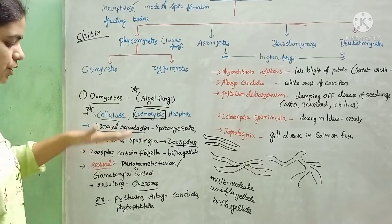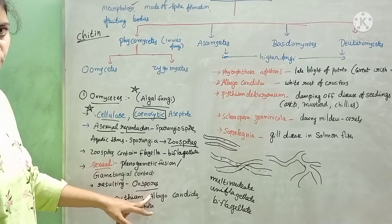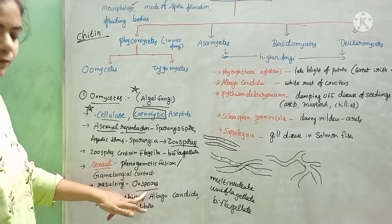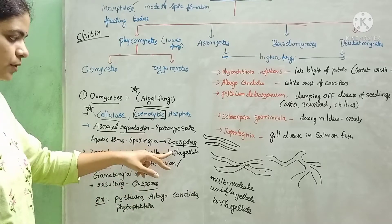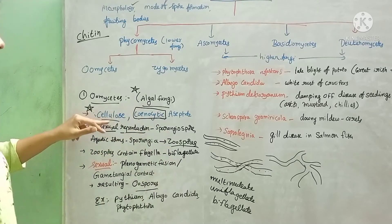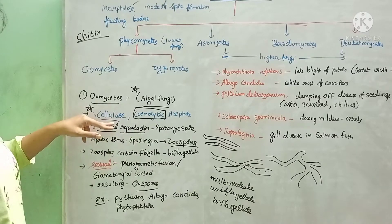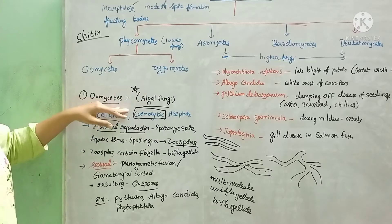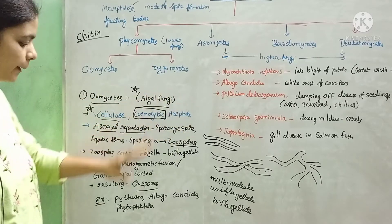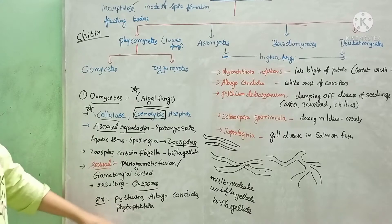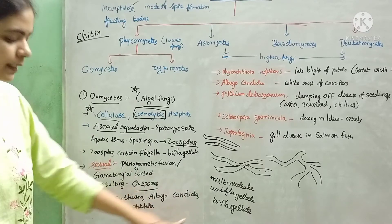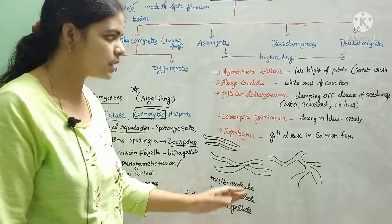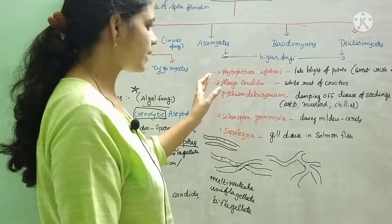Sexual reproduction results in the formation of oospores. Sexual spores are oospores, asexual spores are zoospores. The condition is coenocytic with cellulose cell walls. They are commonly called algal fungi. Examples are Pythium, Albugo candida, and Phytophthora. These oomycetes may cause disease in plants and animals.